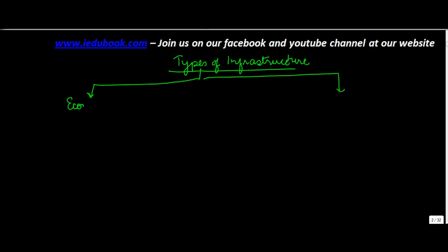Let's understand what are the types of infrastructure. An infrastructure is basically classified into two categories. One is the economic infrastructure and second is called the social infrastructure.